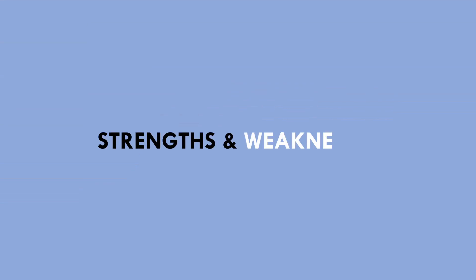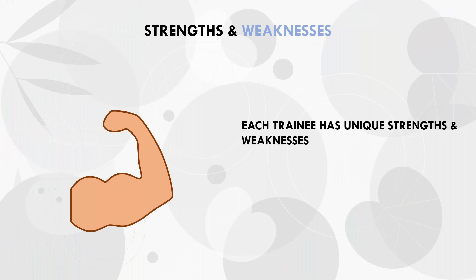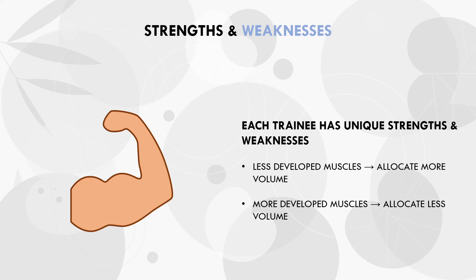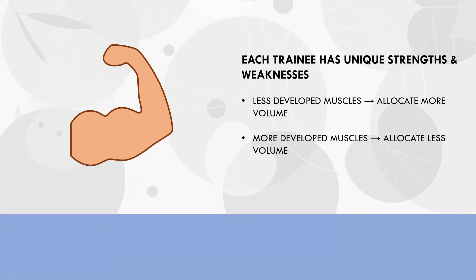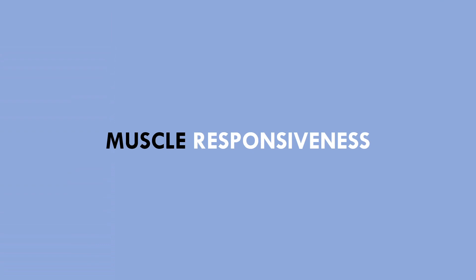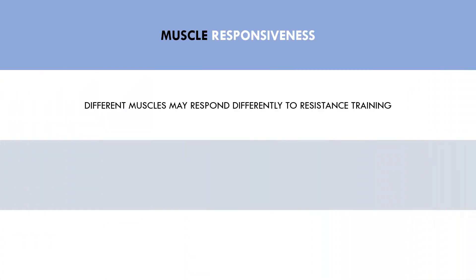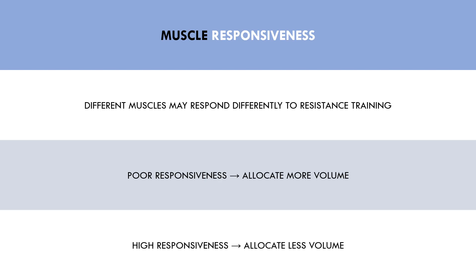The first factor is your individual strengths and weaknesses in terms of muscular development. Each trainee generally has certain muscle groups that are naturally more developed and others that are less developed. To achieve a balanced physique, trainees may want to perform more volume for their less developed muscle groups to experience a faster rate of growth, and less volume for more naturally developed muscles, allowing the weaker muscle groups to catch up. The second factor is the responsiveness of each muscle group. Different muscle groups likely respond differently to resistance training, so trainees may want to allocate more volume to muscles with a poorer response and less to those which are highly responsive.